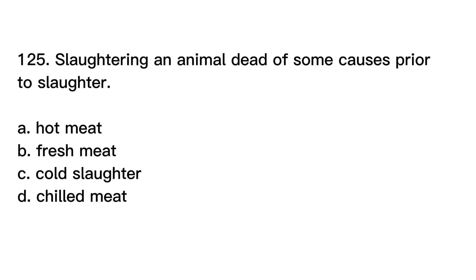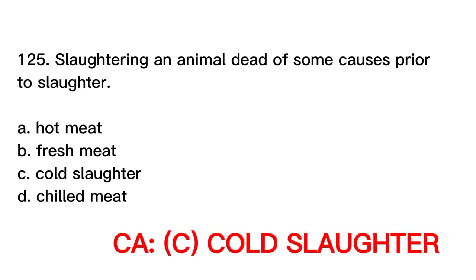Number 125. Slaughtering an animal dead of some causes prior to slaughter. A. Hot meat. B. Fresh meat. C. Cold slaughter. D. Chilled meat. Correct answer is letter C. Cold slaughter.